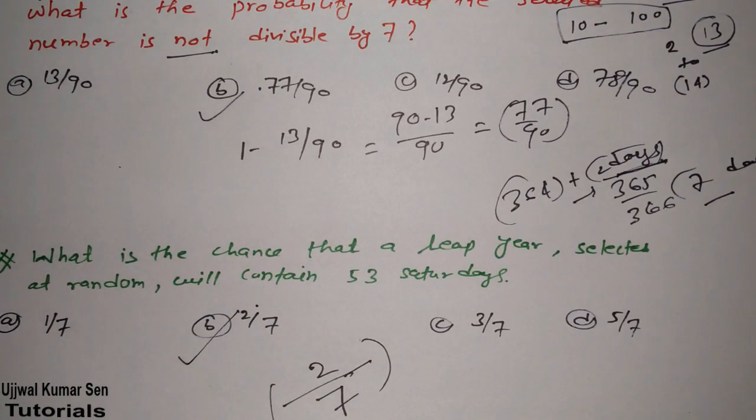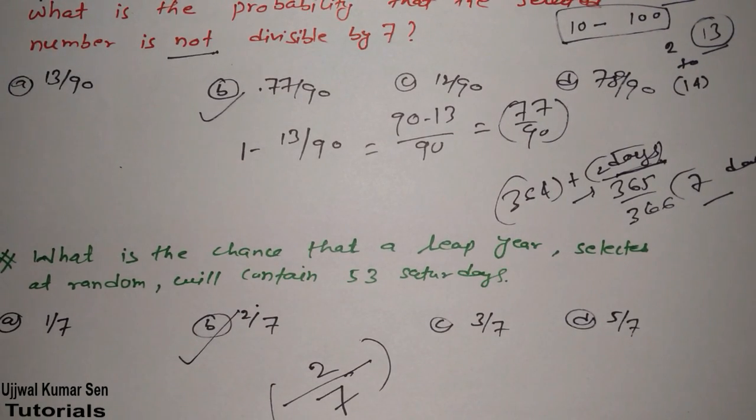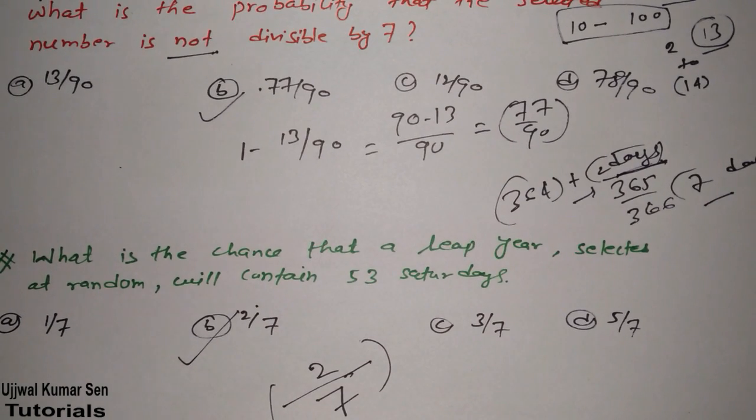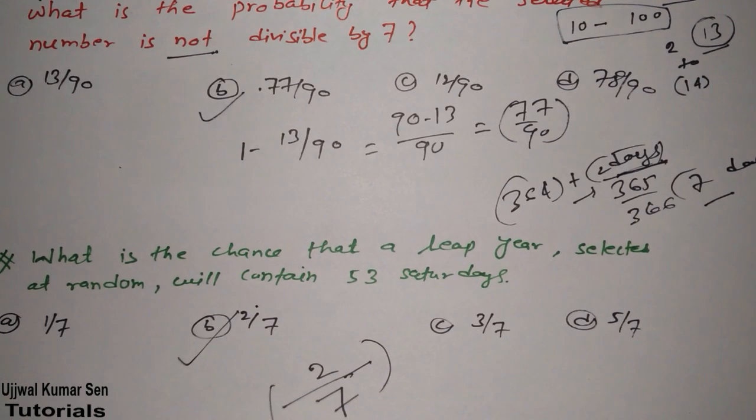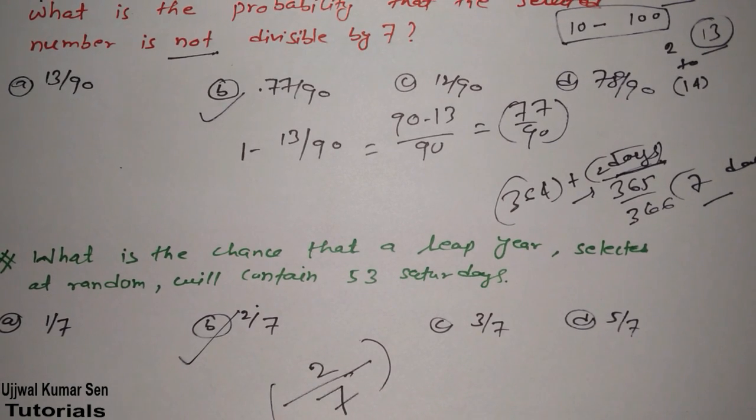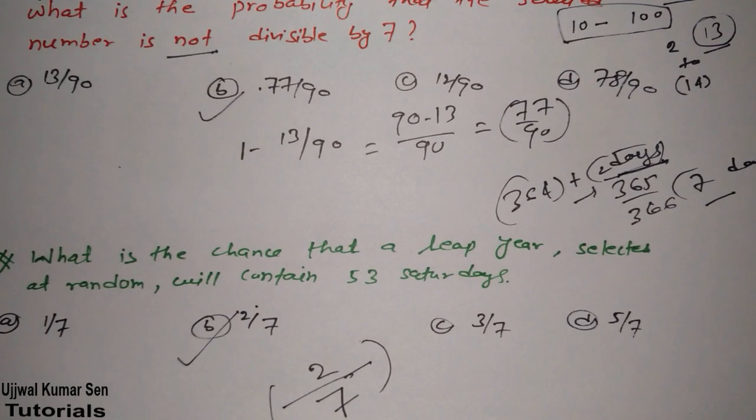So it's two by seven is the right answer. That is B is the right answer. So if you did not get, then you need to understand simple sample space. And in sample space, we have two things that is total number of sample space and possibilities. So possibilities here two and total number of possibilities is seven. That's why answer is two by seven.